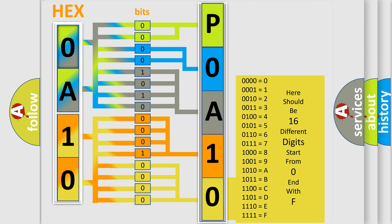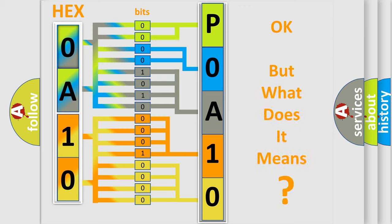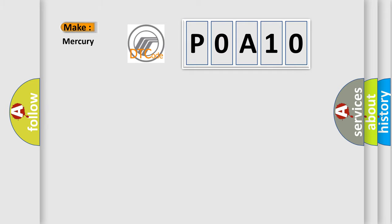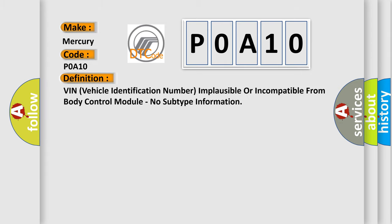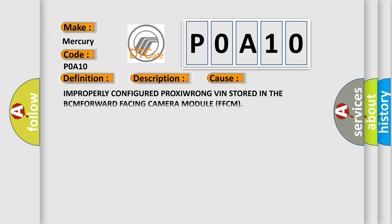We now know how the diagnostic tool translates received information into a more comprehensible format. The number itself does not make sense to us if we cannot assign information about what it actually expresses. So, what does the diagnostic trouble code POA10 interpret specifically for Mercury vehicles? The basic definition is: VIN (vehicle identification number) implausible or incompatible from body control module — no subtype information. The module detects an invalid VIN configuration stored compared to what is being transmitted over the CAN bus from the body control module (BCM). This diagnostic error occurs most often due to an improperly configured or wrong VIN stored in the BCM or forward-facing camera module (FFCM).